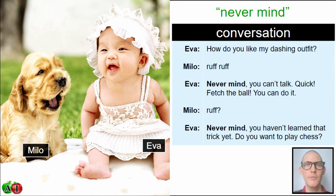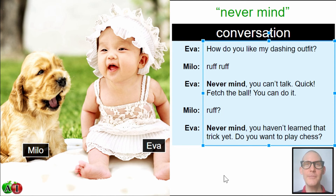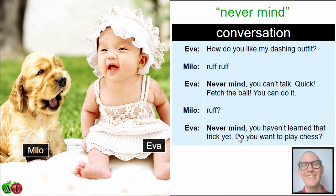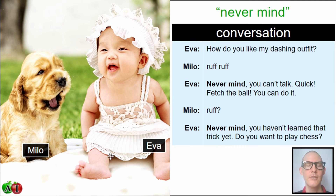Let's go back to the conversation. Eva says: 'Quick, fetch the ball. Go get the ball. You can do it.' Eva's in a great mood, and Milo's in a great mood too. Milo says 'woof?' with a question mark — he's not exactly sure what she said, but he's a good sport, fun to be around, and responds anyway. Eva also says: 'Never mind. You haven't learned that trick yet.' What is a trick?